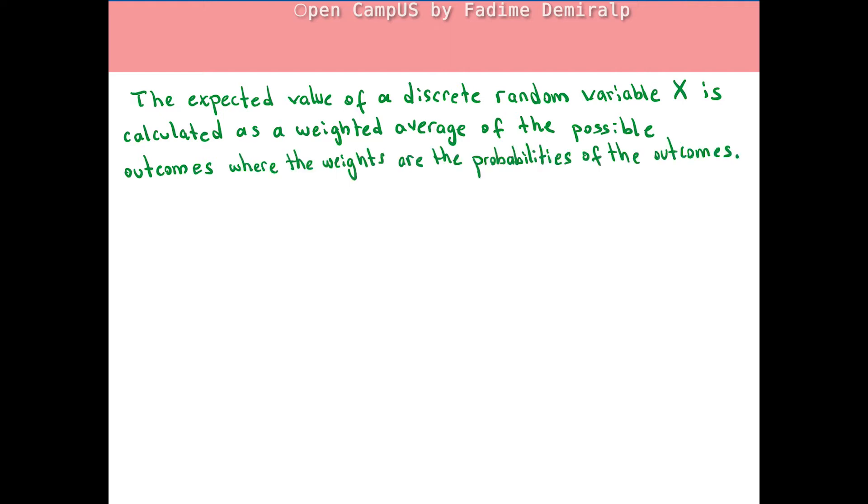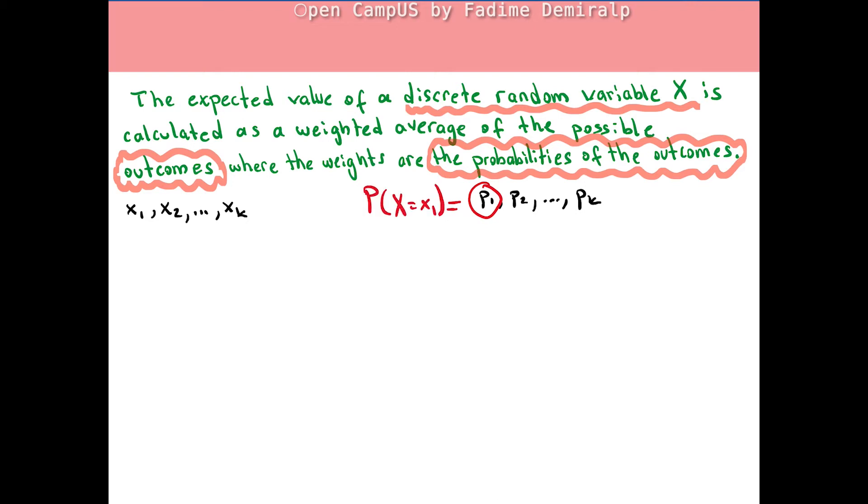Suppose the discrete random variable X has k possible outcomes x₁, x₂, up to xₖ and the corresponding outcome probabilities are p₁, p₂, ..., pₖ. By p₁ we mean the probability that X takes on the value x₁. Similarly, p₂ is the probability that X takes on value x₂, and so on.